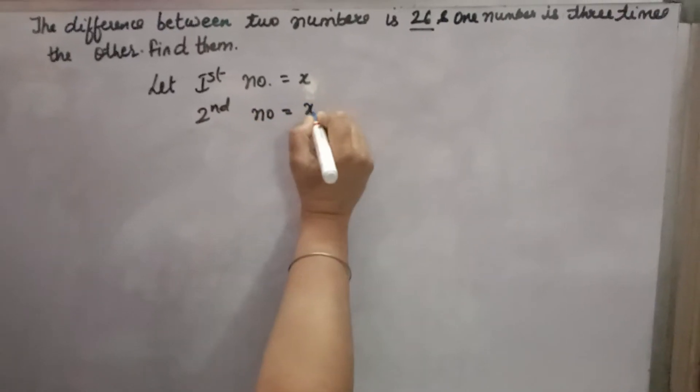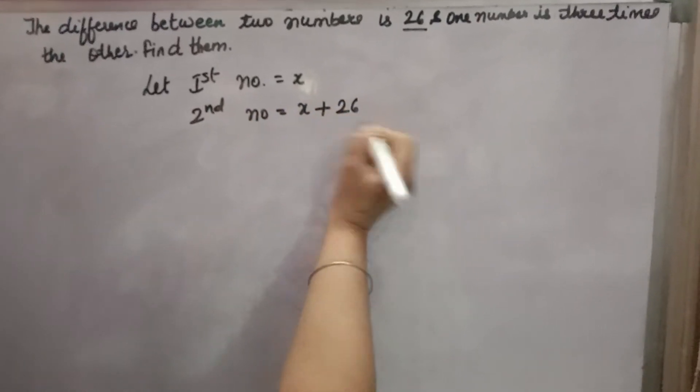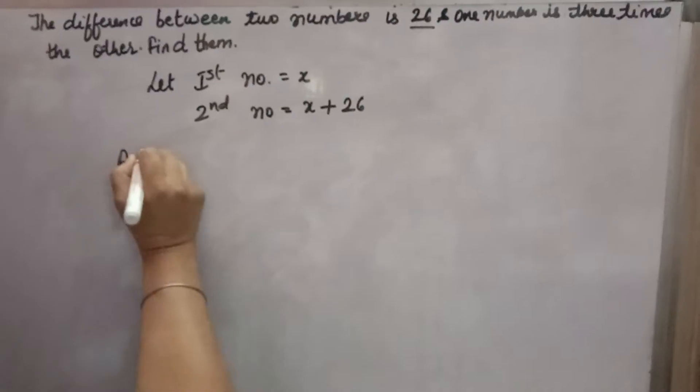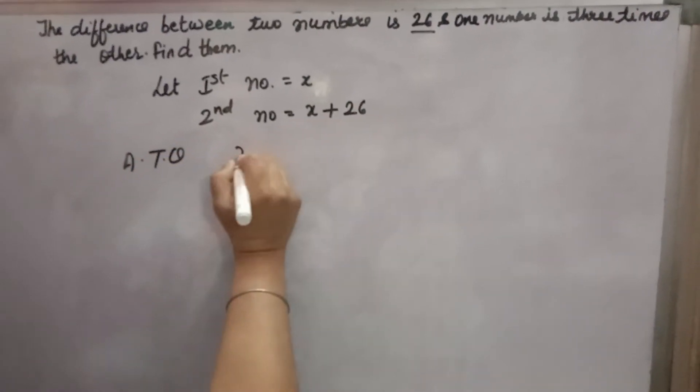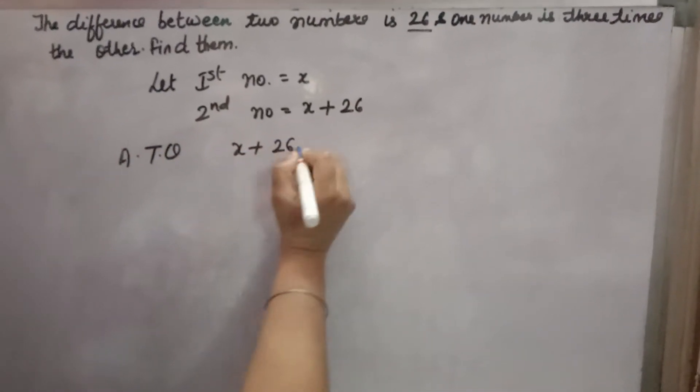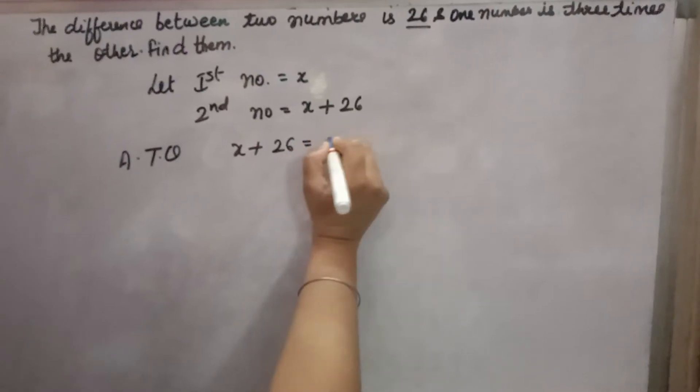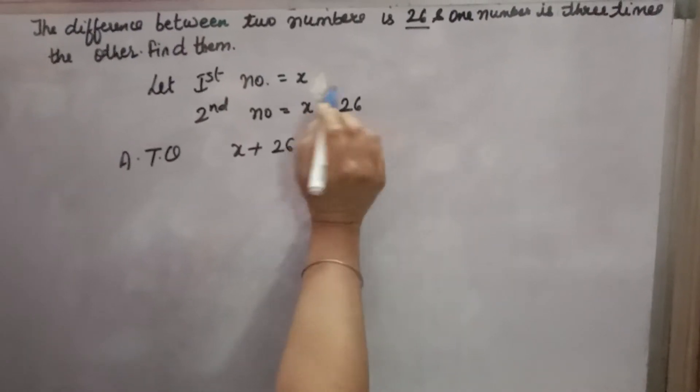Now according to the question, this number is more, so it will come on this side three times the other. Because it is less, you have to take it here with three. Less one.